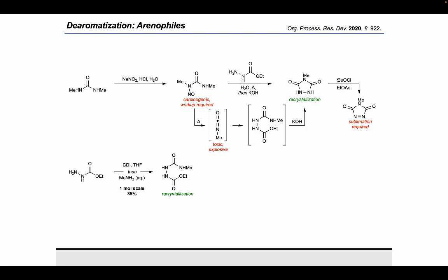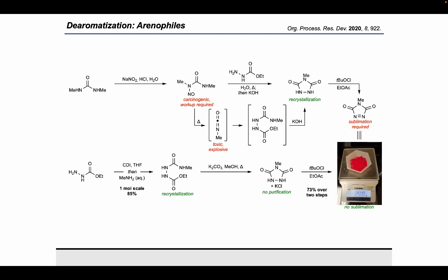We thus reimagined the synthesis to begin with ethylcarbazate; treatment with CDI followed by methylamine provided the cyclization precursor, which could be crystallized and produced on one mole scale. Thereafter, treatment with potassium carbonate in a solution of methanol under reflux, followed by acidification, yielded a mixture of urazole and KCl salt after evaporation of solvent. The mixture was not crystallized, but used directly in the following oxidation step, filtered, and evaporated to provide MTAD, which showed virtually no difference in both yield and initial selectivity when used in our arenophile chemistry.